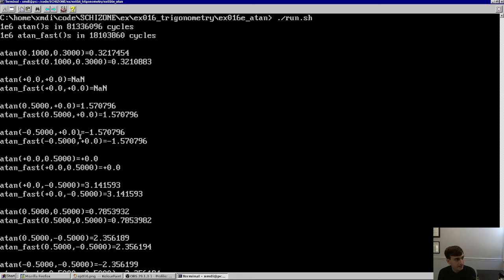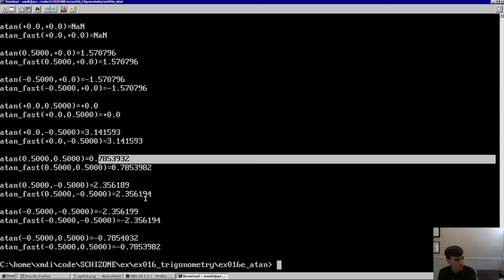But you get the same answers, or close. So if you take arctangent of 0.1 and 0.3, using Taylor series, you get 0.3217. With the faster version, you're getting 0.3211. So not quite exactly the same number, but pretty darn close. For these special cases, you do get the same answer because these are hard-coded. Obviously, arctangent of 0,0 is not a number. Similarly, the faster polynomial version also has that same precaution built in. For all the special cases you can see here, we are getting the same answer. Positive π/2, negative π/2, 0, π, all that stuff. We are getting the same answer from one to the other.